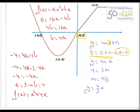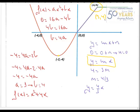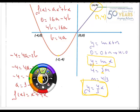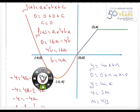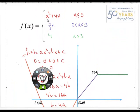Ya sé que esa recta es del tipo y = mx. Ahora le digo que tiene que pasar por el punto (3,4): cuando x sea 3, la y me tiene que dar 4. Despejando resulta que la pendiente vale 4 tercios. Por tanto, la recta que trabaja en el intervalo de cero a tres es y = (4/3)x, tal como lo tengo escrito aquí.